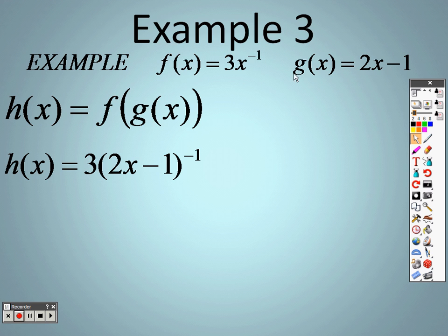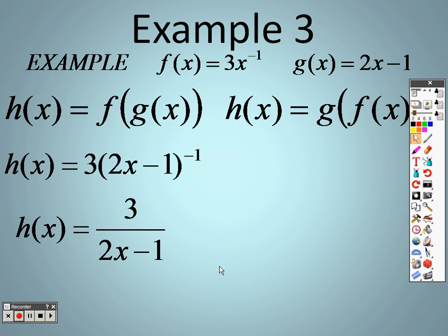g of x, which was 2x minus 1, I plugged it in for x right here. So notice how the x I took out, I plugged the whole entire item in there. Because it's to the negative 1 and we can't have negative exponents, all of this goes to the denominator because all of that is to the negative 1 power. So I move all that down so your official answer is 3 over 2x minus 1.